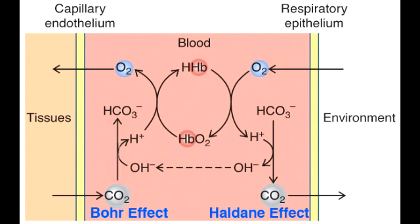What are the three different forms that carbon dioxide is transported from the tissue to the lungs? Carbon dioxide is transported from tissues to lungs as bicarbonate, which happens in 90% of the cases. It can also be transported as carb-amino hemoglobin, which happens in 5% of the cases. In this form, carbon dioxide is bound to hemoglobin at the N-terminus of the globin chain, not heme.